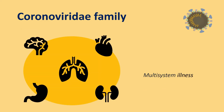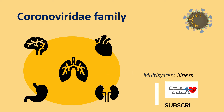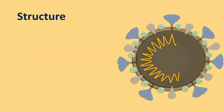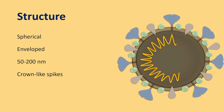In the majority of cases, the primary portal of entry remains respiratory. However, all organ systems can be affected by coronavirus. Coronavirus is a spherical envelope virus that measures 50 to 200 nanometers. They have crown-like spikes on the outer surface which gives them the name Corona.